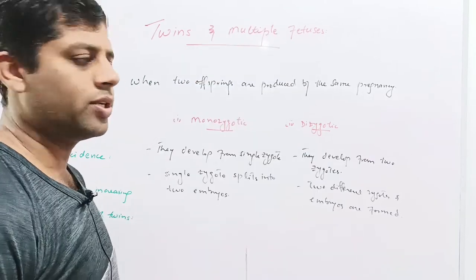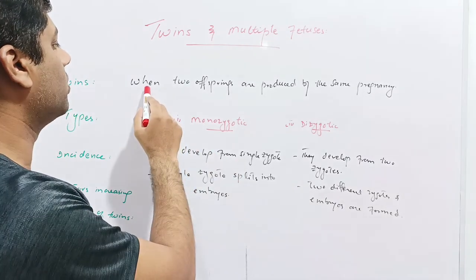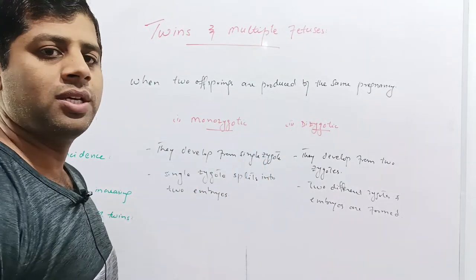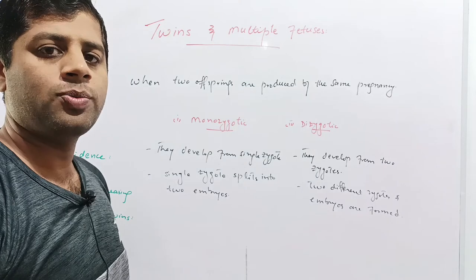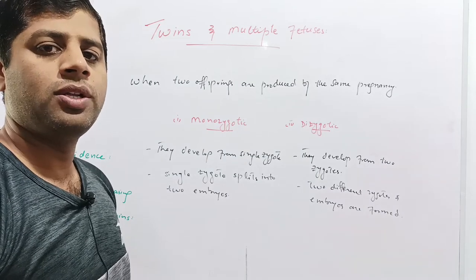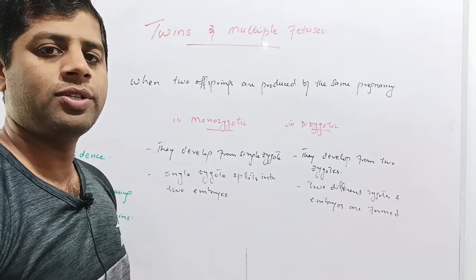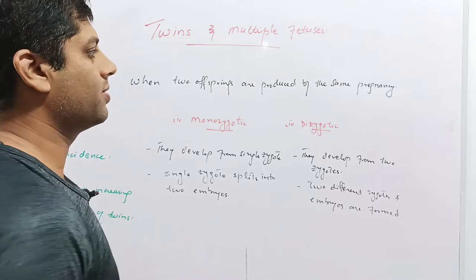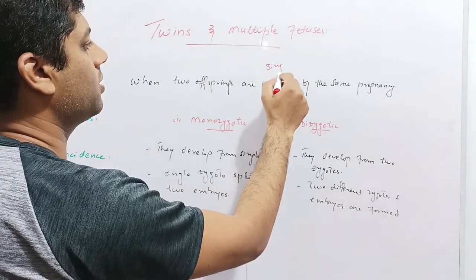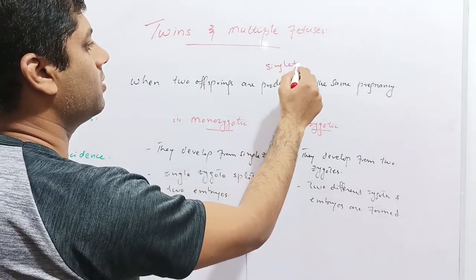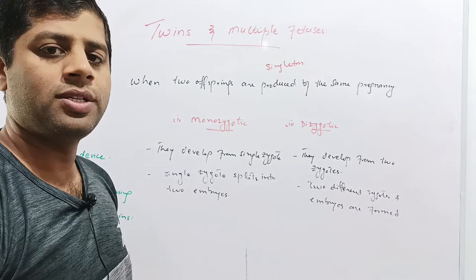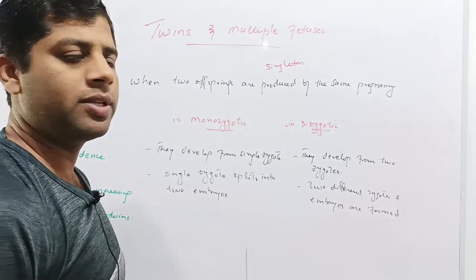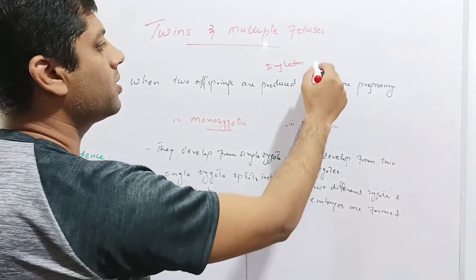So at the very outset, the definition of twins: when two offsprings are produced by the same pregnancy, these offsprings are termed as twins. Normally a single fetus is produced in a single pregnancy — this is called a singleton fetus. When two fetuses are born in a single pregnancy, these are called twins.